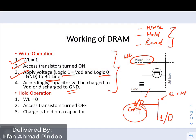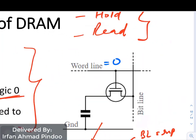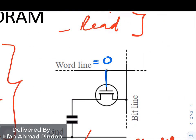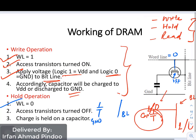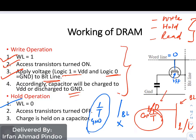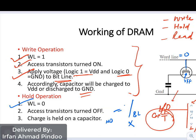Now for the hold operation — the word line will be 0. Since this is an NMOS transistor and its input is 0, the transistor turns off. Once the transistor is off, the capacitor and the bit line are disconnected from one another, so you cannot retrieve data. Whatever value is stored in the capacitor will be held there. Whenever WL is 0, the access transistor turns off and the charge is held on the capacitor only.